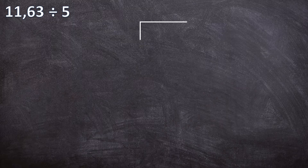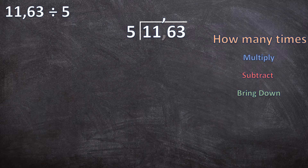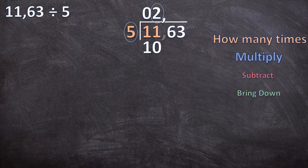Let's have a look at 11,63 divided by 5. First we have our division bar, our dividend inside the bracket, our divisor in front, our four steps, and our two extra steps before we begin. We write the comma exactly above the comma in the dividend, and we ignore the comma. First step: how many times can five go into one? Five cannot go into one, so we add a zero above the one and include the next digit. How many times can five go into 11? Five can go twice into 11. Multiply: 2 times 5 is 10. Subtract: 11 minus 10 is 1. Bring the next digit down — the 6.